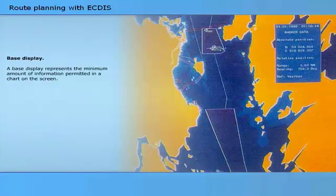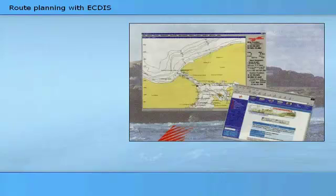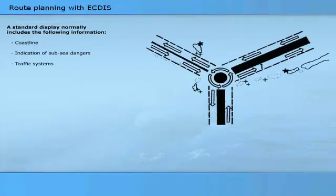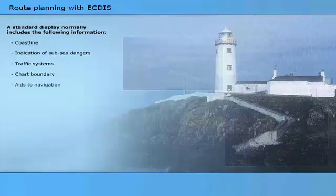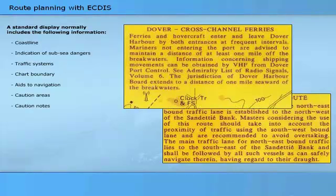A base display represents the minimum amount of information permitted in a chart on the screen. A typical base display shows: coastline, indication of subsea dangers, traffic systems, and chart points. After start-up of the ECTIS system, a standard display is normally presented on the screen. A standard display normally includes: coastline, indication of subsea dangers, traffic systems, chart boundary, aids to navigation, caution areas, and caution notes. The navigator decides which elements are included in the standard display.